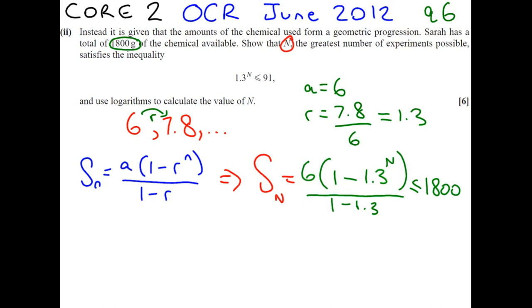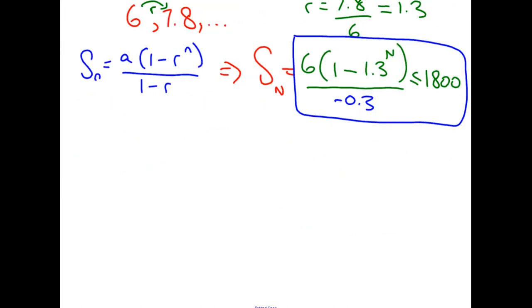Now we have to use this information, this green formula, and get to this answer. That's what a show that means. So what we're going to do is we're going to think, well, 1 minus 1.3 is minus 0.3. And we are going to do some algebra to simplify this inequality.